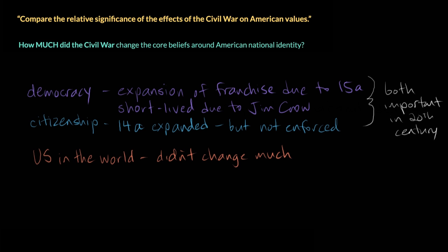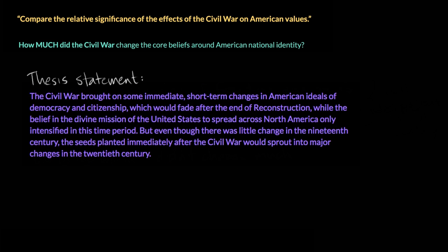So we might answer our question with the following thesis statement: The Civil War brought on some immediate short-term changes in American ideals of democracy and citizenship, which would fade after the end of Reconstruction, while the belief in the divine mission of the United States to spread across North America only intensified in this time period. Even though there was little change in the 19th century, the seeds planted immediately after the Civil War would sprout into major changes in the 20th century. How would you weigh these pieces of evidence to draw conclusions about how the Civil War changed American values? You might come up with a completely different thesis statement, and that's perfectly fine. The important part of thinking like a historian is to gather evidence and then craft an argument supported by that evidence.